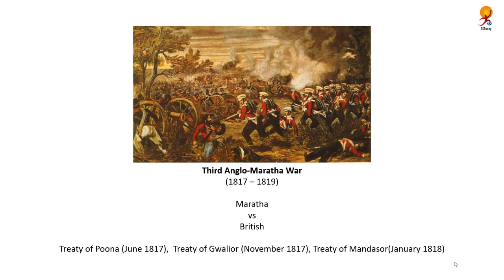The Third Anglo-Maratha War broke out in 1817 and lasted till 1819. It was a reaction from the Marathas against the British handling of the Pindaris. Three treaties were signed, ending the Maratha-British conflict for the next hundred years: the Treaty of Pune in June 1817 with the Peshwa, the Treaty of Gwalior in November 1817 with Sindhia, and the Treaty of Mandsaur in January 1818 with Holkar.